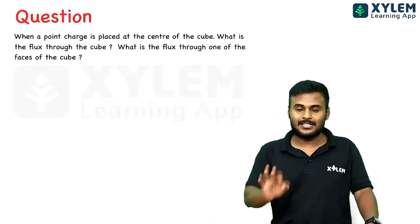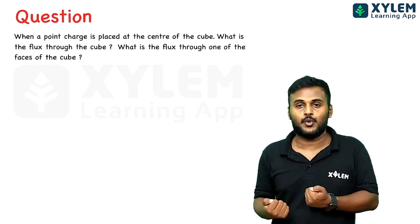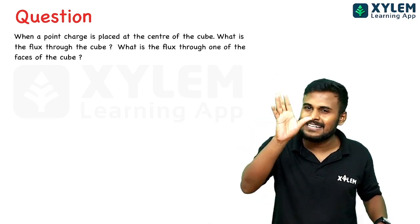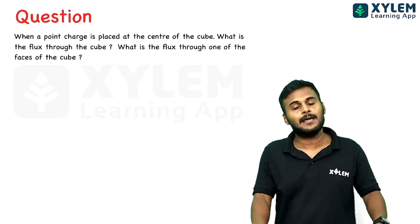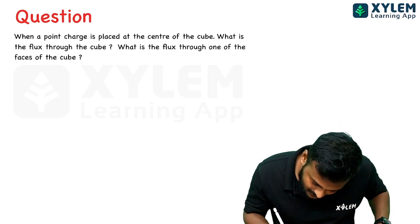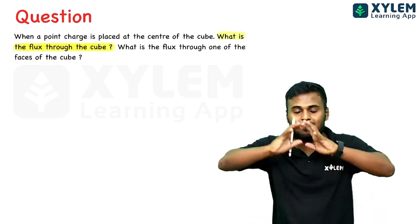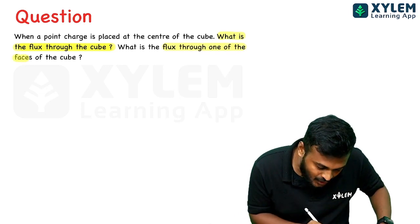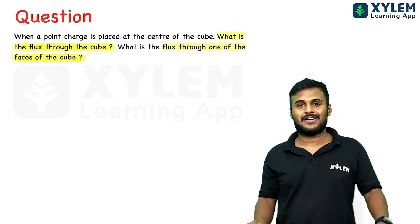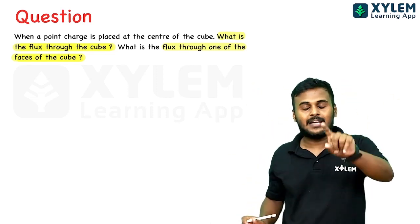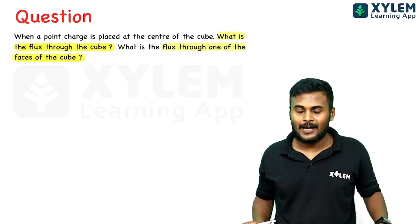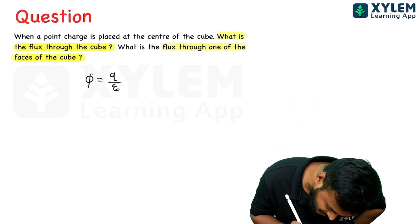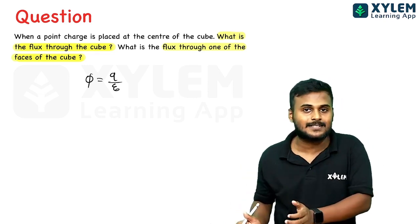Third question: A point charge is placed at the center of a cube — you can think of a Rubik's cube. What is the total electric flux through the cube? And what is the flux through one face of the cube? By Gauss's law, total flux = q/ε₀.